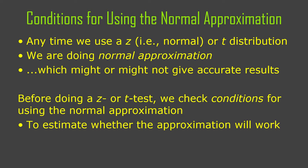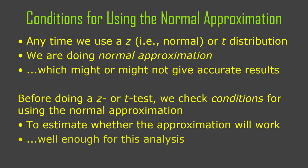There are two reasons we check conditions, but let's talk about the normal approximation condition first. The biggest reason is to make sure, or as much as possible, that we know whether the normal approximation is appropriate — whether it will give us accurate values. Nothing's perfectly normal, so our question is really: are the values accurate enough for this analysis, for our purposes in a particular analysis?